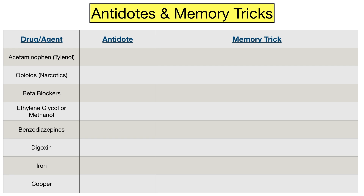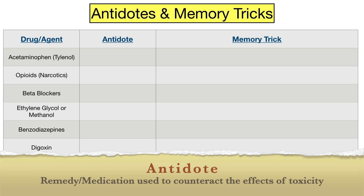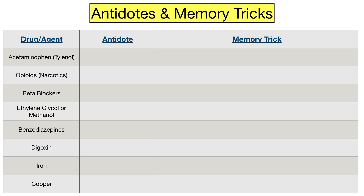Welcome back to the channel where medical topics are made easy. Today I'm going to show you simple memory tricks that will help you remember common antidotes that show up on medical and board exams and that you might encounter in practice. Remember, an antidote is a remedy or medication given to counteract the effects of poison, toxicity, or overdose. Antidotes frequently pop up on exams but they can be easy to forget, so I want to come up with a simple way to help you remember them.